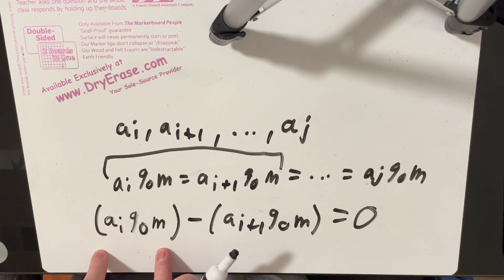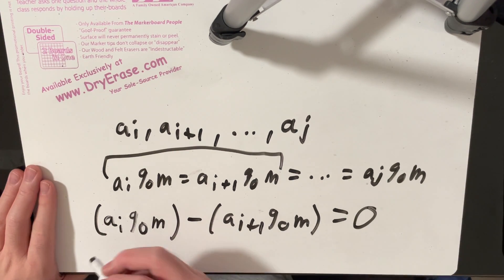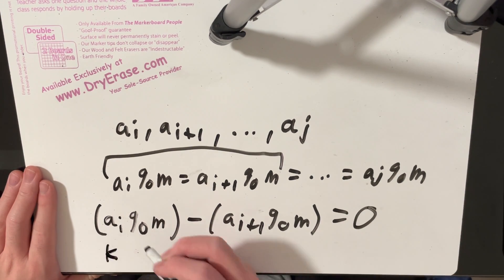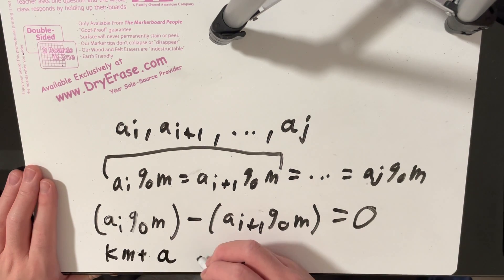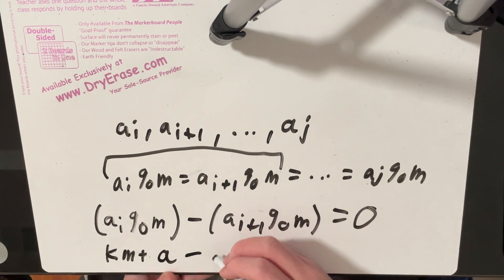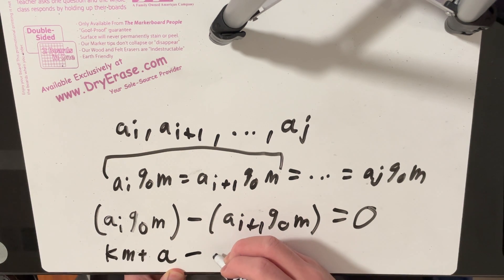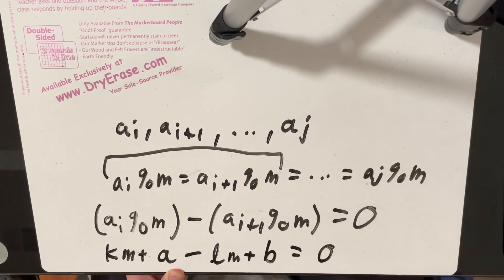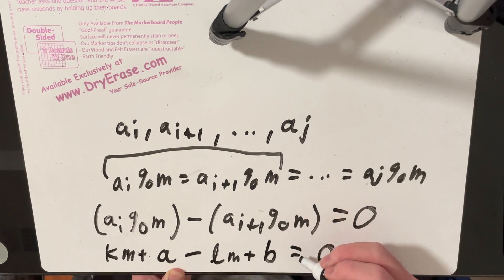Yeah, so this number mod m minus this number mod m must equal to zero. So let's try to expand the mod term a little bit, because we can represent a_i mod m as some integer k times m plus the remainder of this, plus the remainder itself as it says a.